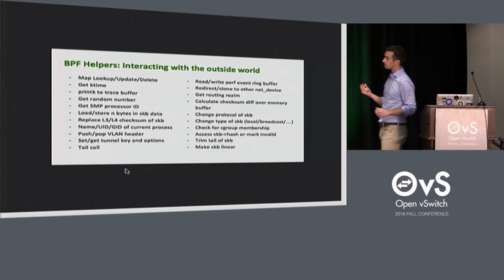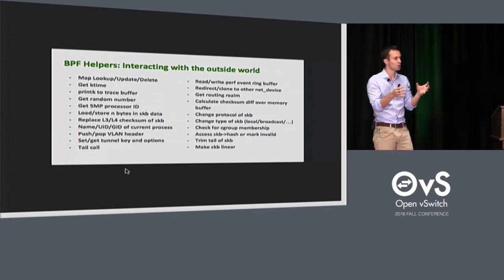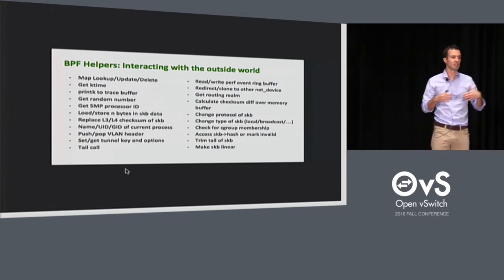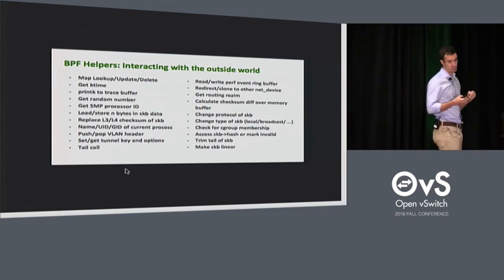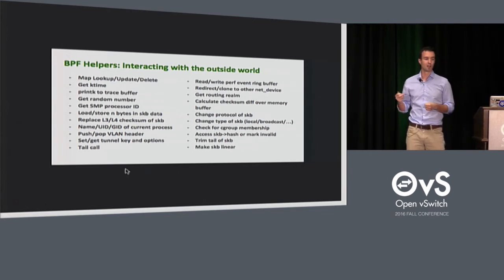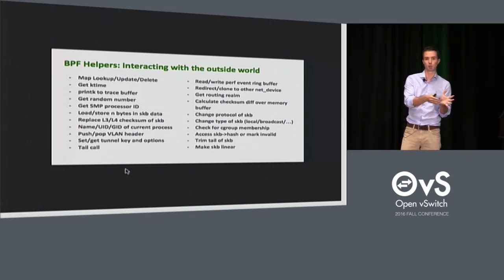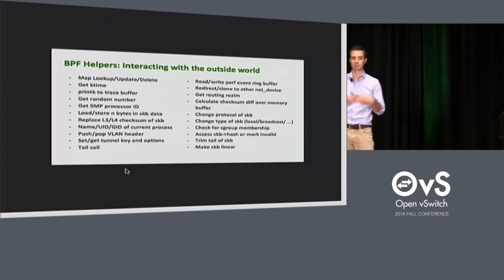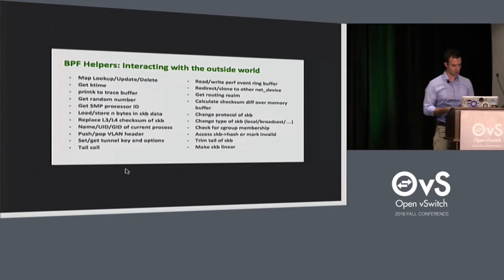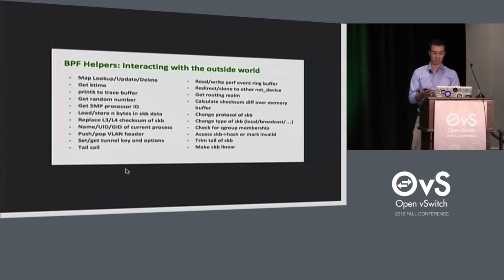Last but not least: helpers. Bytecode itself runs in a completely isolated environment — you cannot call into kernel functionality directly. In order to interact with the kernel and the outside world, you need to call helper functions. These are specially whitelisted function calls which each BPF program can make. Depending on where you run the program, you will have different capabilities. In terms of helper functions, we can access maps — lookup, update, delete.